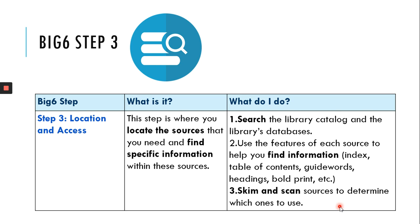So you're going to search the library catalog and the library's databases. You're going to use the features of each source to help you find information, which might include indexes, table of contents, guide words, headings, bold print, etc. And then you're going to skim and scan sources to determine which ones to use.